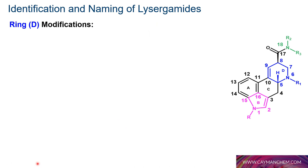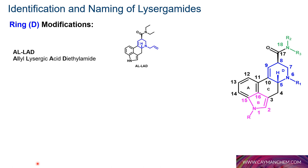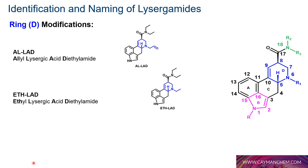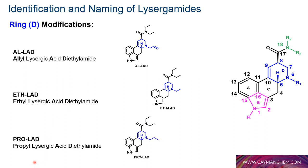For modifications at the piperidine nitrogen N6: AL-LAD — AL for allyl, L for lysergic acid, A for acid, D for diethylamide. FLAD — F for ethyl (from the German), L for lysergic acid, A for acid, D for diethylamide. These examples follow the Shulgin naming convention using LAD as the parent name.